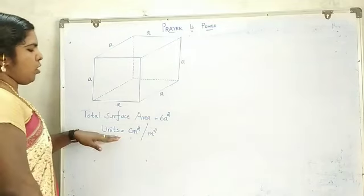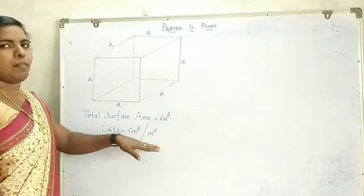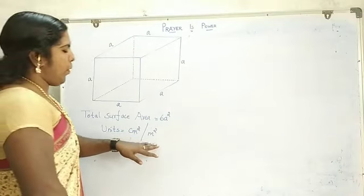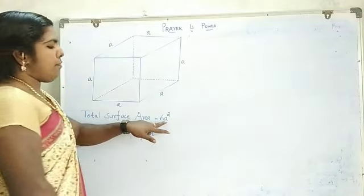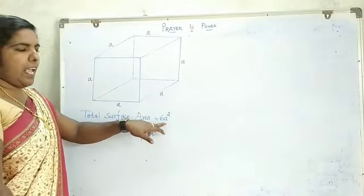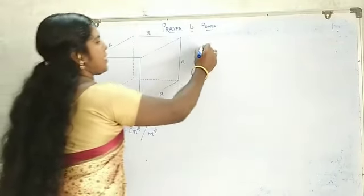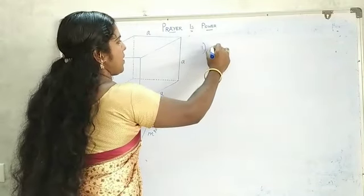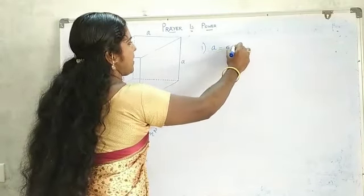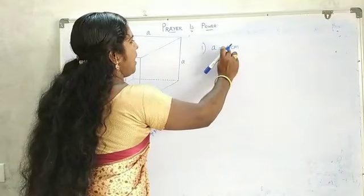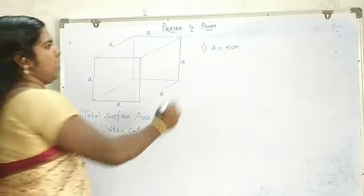Suppose the length of your side, a, is equal to 5 centimetres. Then find out the total surface area.